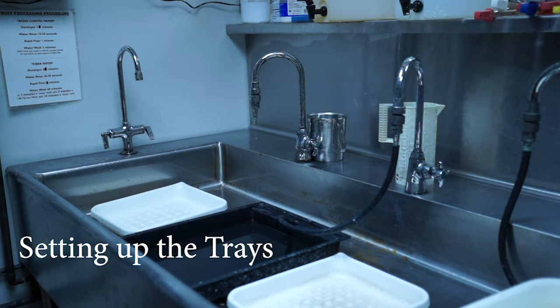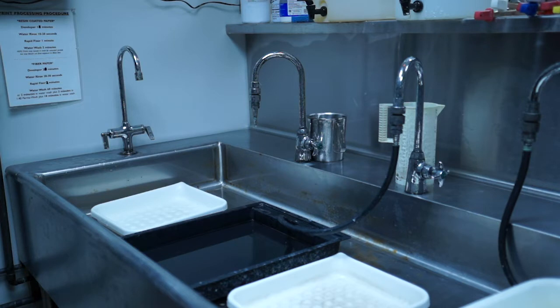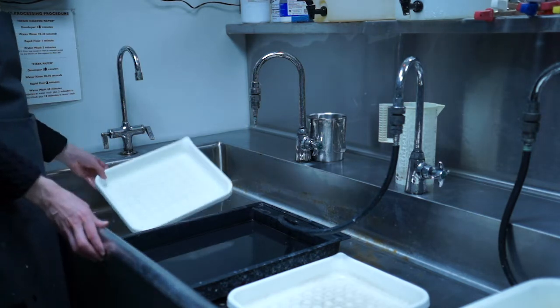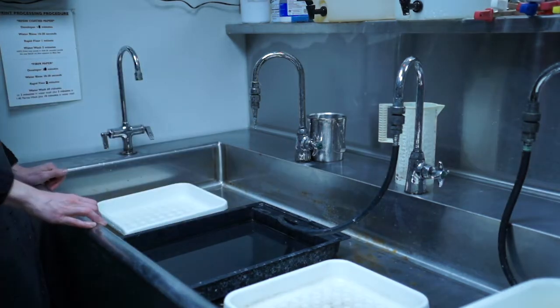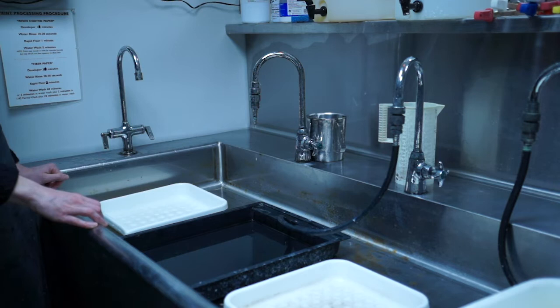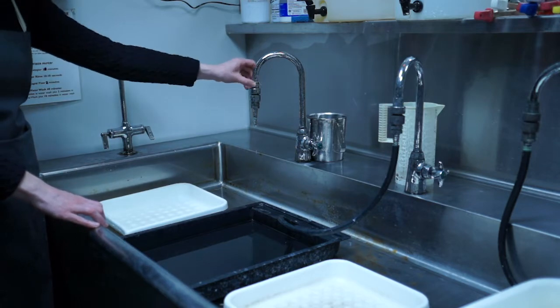Here we're going to be setting up the trays for processing black and white paper. We're going to be using 8x10 trays, which are the smallest size in our darkroom. You want to have the white lights on while you're doing this, and make sure you have some of the relatively clean trays that might be around here.